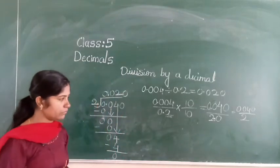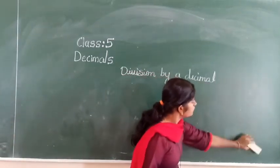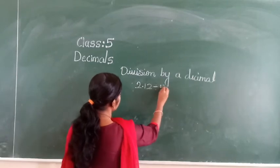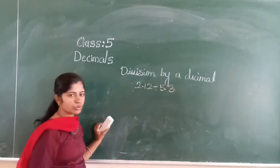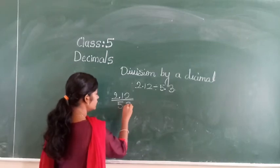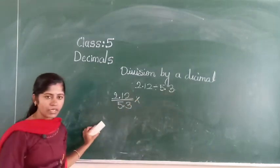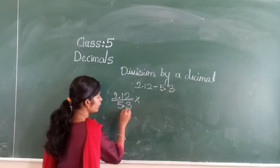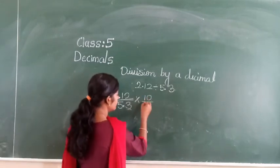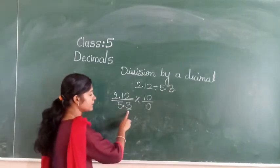I am solving examples from your My Practice Time 8. Let us take one more example: 2.12 divided by 5.3. First write 2.12 divided by 5.3 in fraction form. Which number do I have to multiply with? I have to multiply with 10. In the denominator's decimal place, how many digits are there? Only 1 digit, so take 10 by 10. Why did I take 10? Because in the decimal place only 1 digit is there.